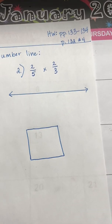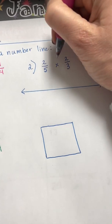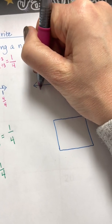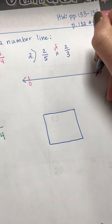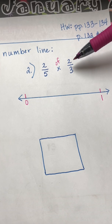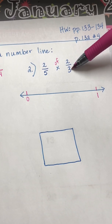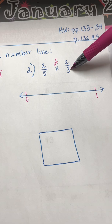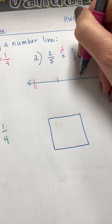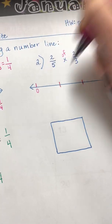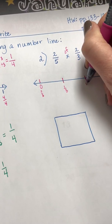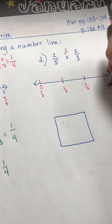Alright, let's take a look at number two. We have two-fifths of two-thirds. First we need to split our number line between zero and one, focusing on our two-thirds. We look at the denominator, which is three, so we need to split this into three pieces. So there's zero-thirds, one-third, two-thirds, and three-thirds, which is one whole.